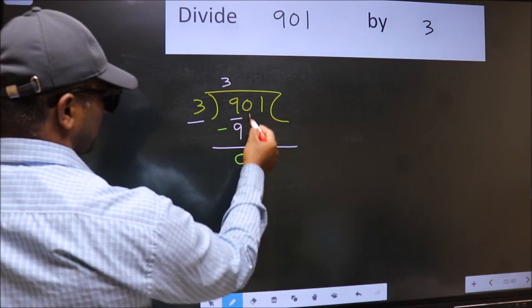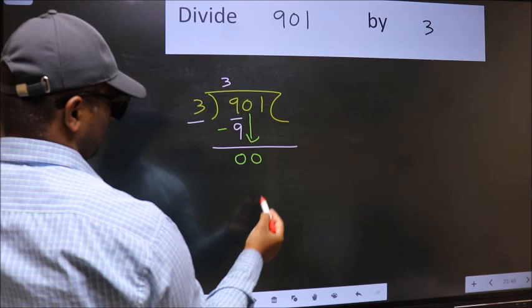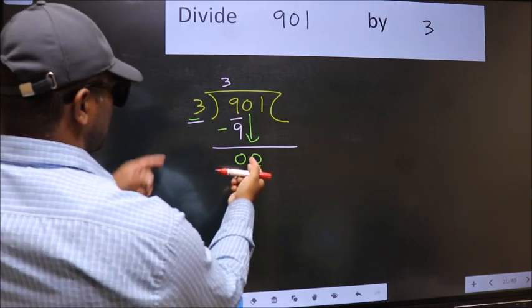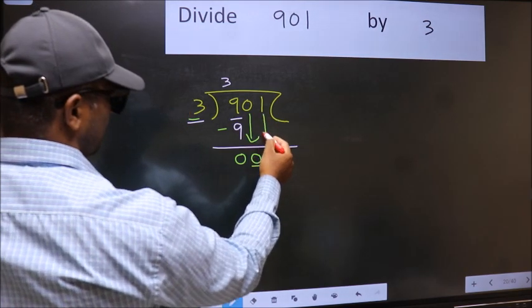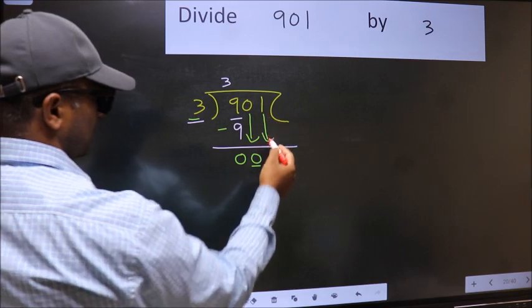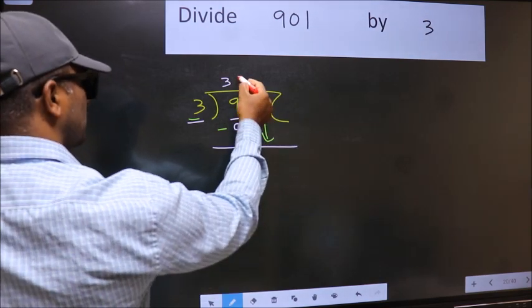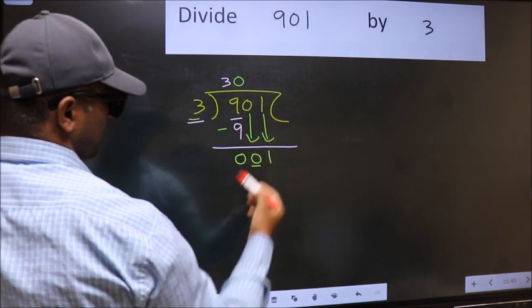After this, bring down the beside number. So 0 down. Now here we have 0 and here 3. 0 is smaller than 3. So we should bring down the second number. And the rule to bring down the second number is we should put 0 here. Then only we can bring down the second number.